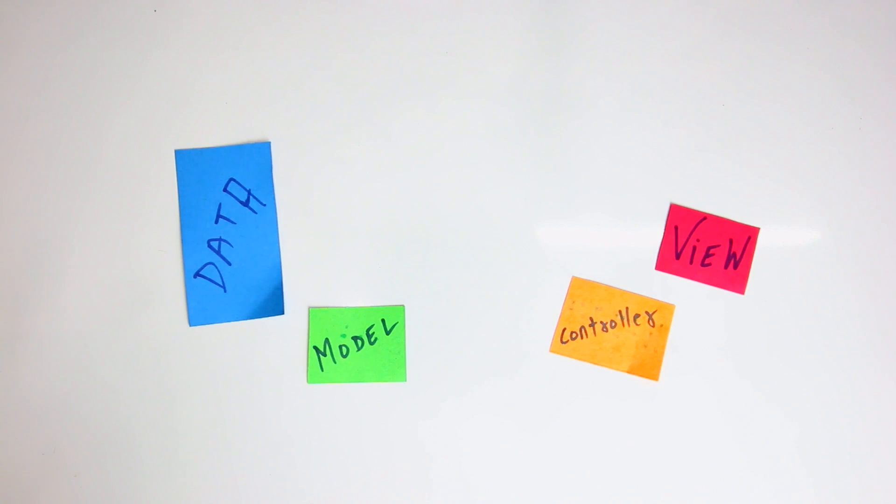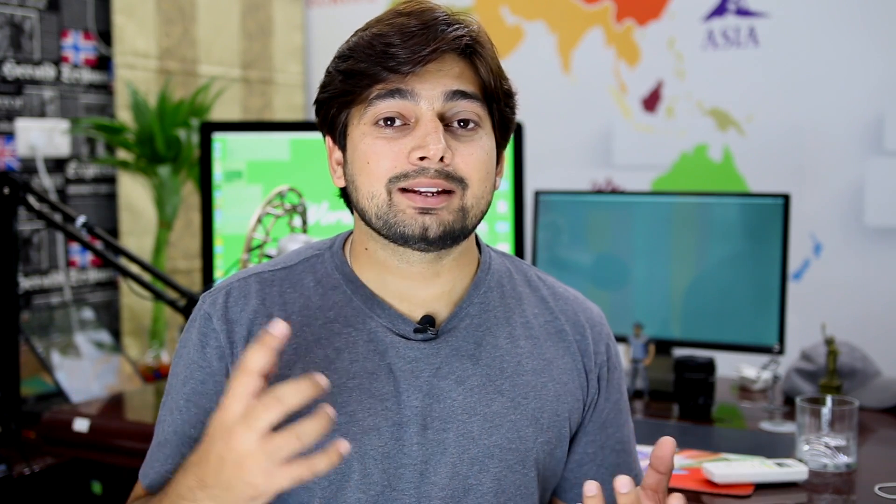Let me show you how it maps: you — the customer — are the View. The waiter is the Controller. And yes, the cook is the Model. The fridge is the Data. You've been going to restaurants and they've been following Model View Controller all along! Now, a lot of people believe MVC is only for .NET, Ruby, or PHP — but it's not. It's a design pattern, a way to arrange your code, applicable in PHP, Swift, Java, .NET, Ruby, Python — everywhere.